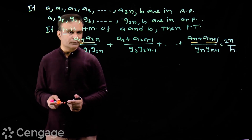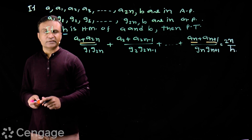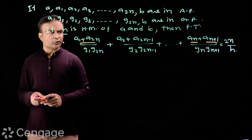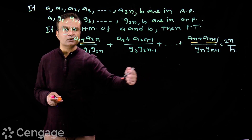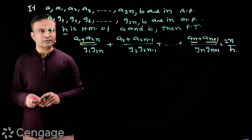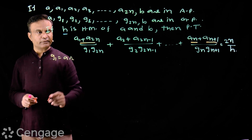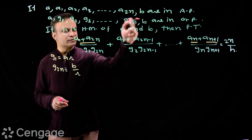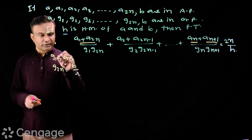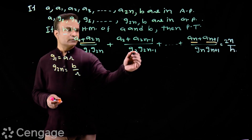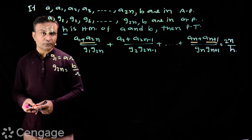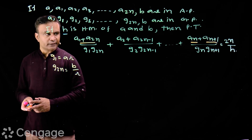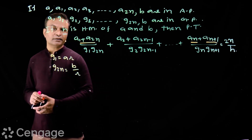Now let us check the denominators. What is g1 multiplied by g2n? This is equal to a multiplied by b. We have done this property in geometric progression: the product of the rth term from the start and the rth term from the end is constant, equal to the product of the first term and the last term. Here g1 equals a·r and g2n equals b upon r. Multiplying these two gives product ab. Similarly, g2 multiplied by g2n minus 1 is also ab, and gn multiplied by gn plus 1 is also ab. In fact, in each term the denominator is a multiplied by b.